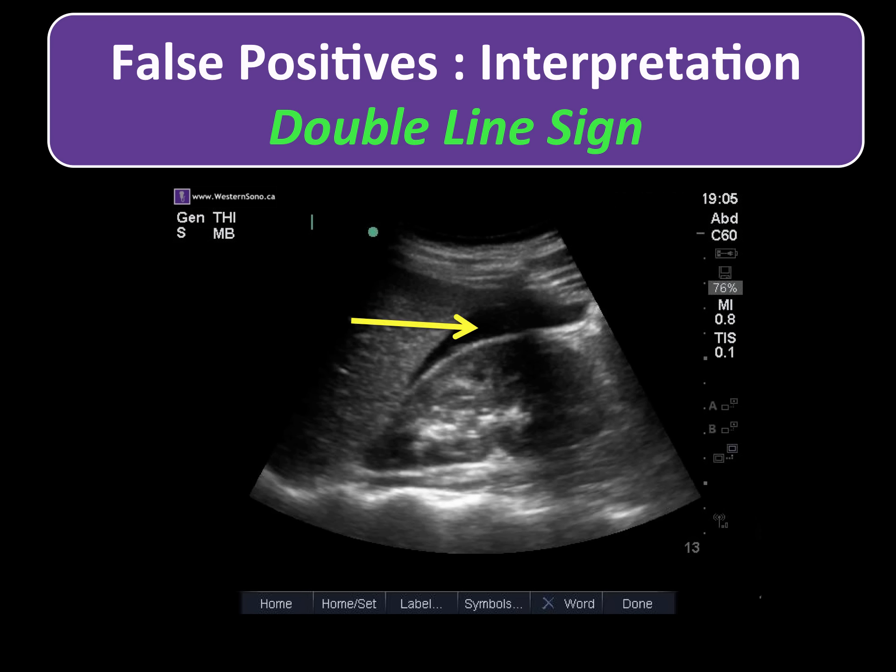You can see here in this example of a true positive: there is a bright echogenic line along the kidney, but along the liver the fluid directly abuts the liver edge and is not encased with a second white line.